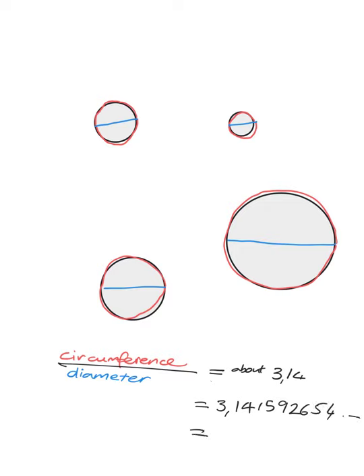That number is given a very special name, which is pi, written with the symbol π. So here's a special fact: if you take the circumference of any circle and divide it by the diameter of that circle, you will get the answer pi. Pi is a funny number where the decimals go on forever — 3.14159265, etc. It's a funny number that's just a little bit bigger than 3.